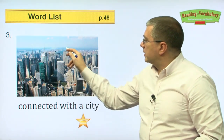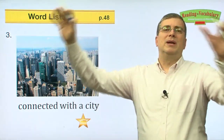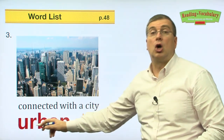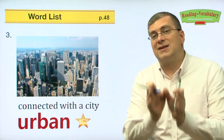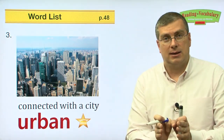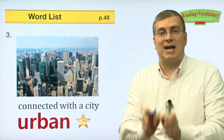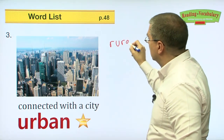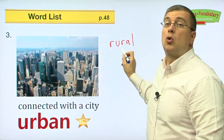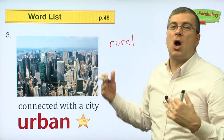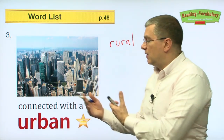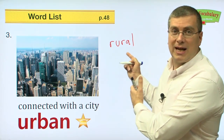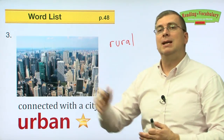Number three. This is a big city — it looks like New York with Central Park in the background. When we talk about big cities, any big city, we say 'urban.' If you live in a city, you are living in an urban setting. But if you live on a farm in the countryside, you are living in a rural setting. Urban and rural are opposites. I live in a city — I live in an urban place. I live on a farm — I live in a rural place. Rural is countryside; urban is city.